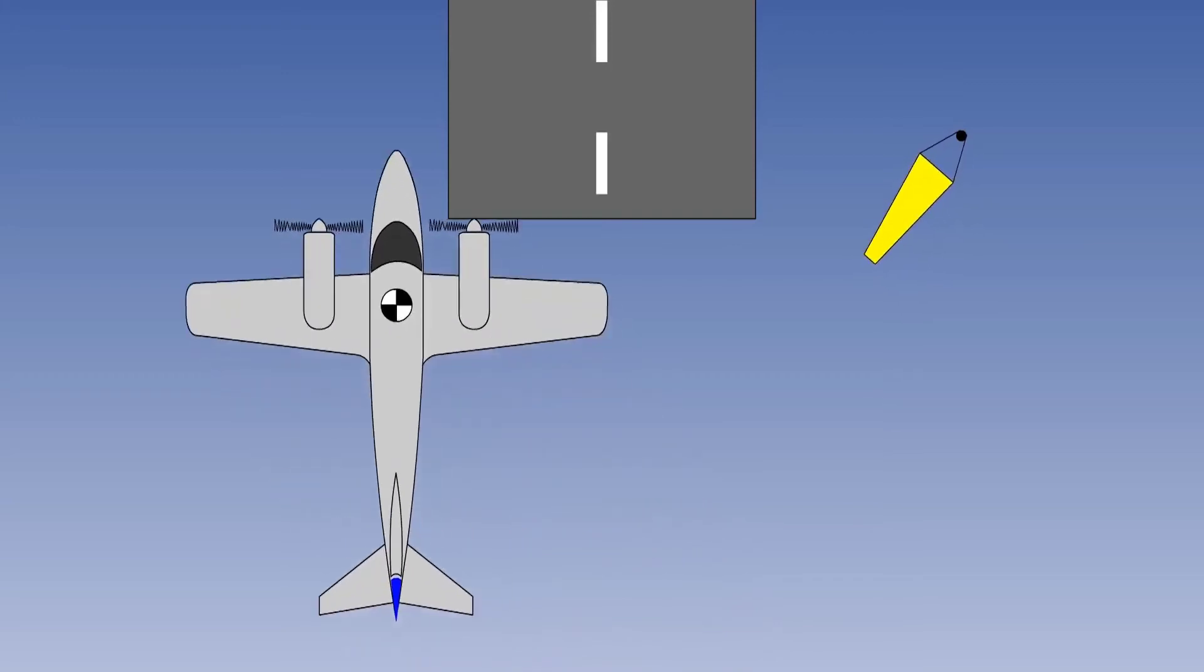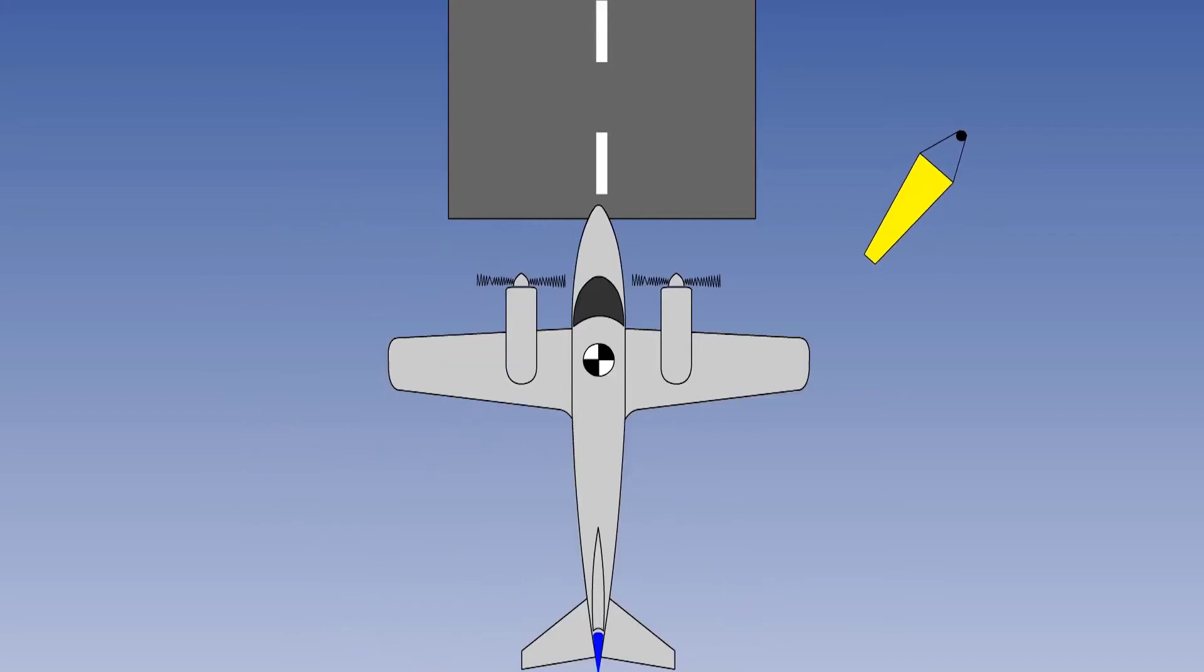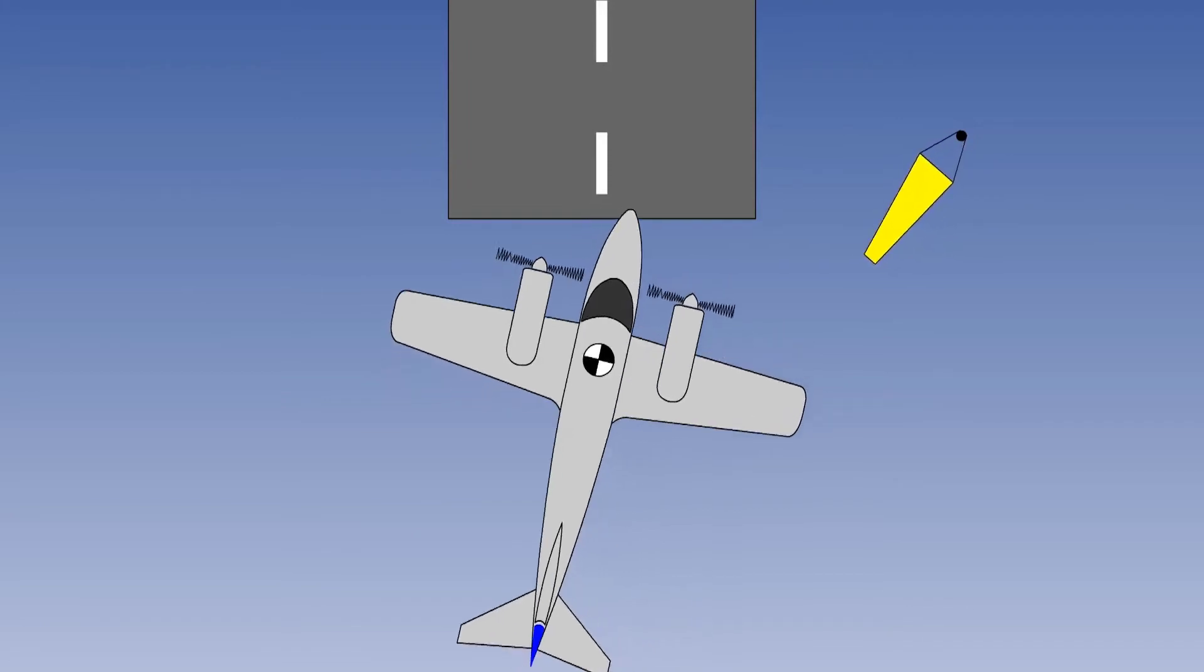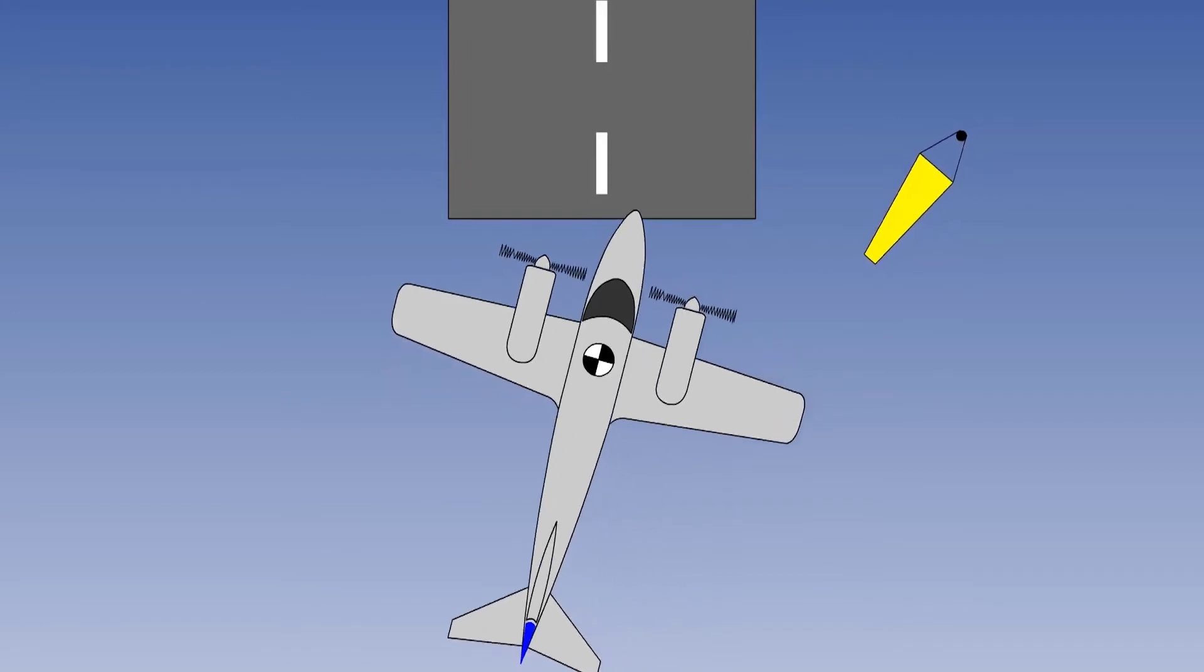What you should do is position the aircraft on the extended runway centreline, but fly it in a direction slightly towards that from which the crosswind is coming, in this case to the right. Please note, you are not using the rudder to do this.